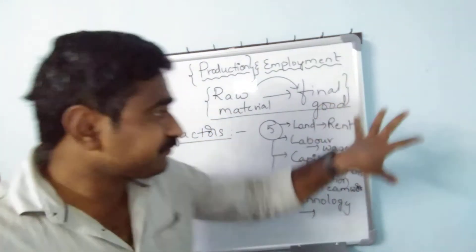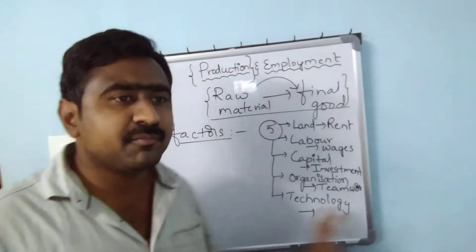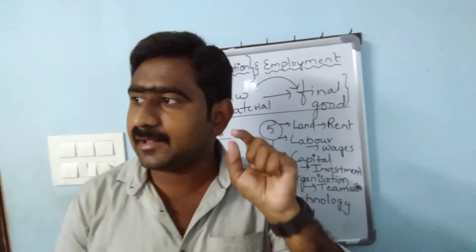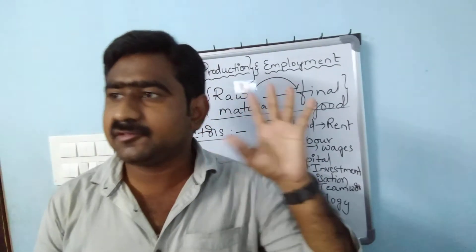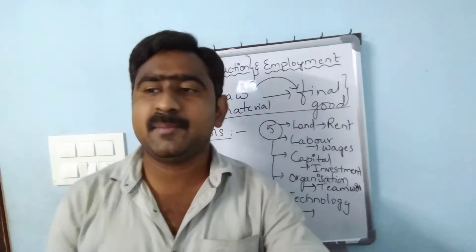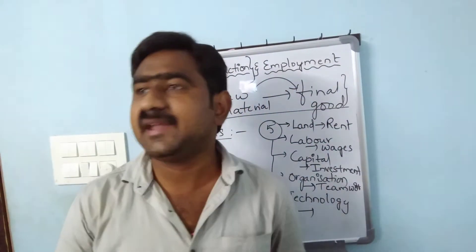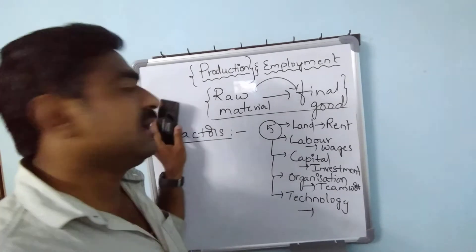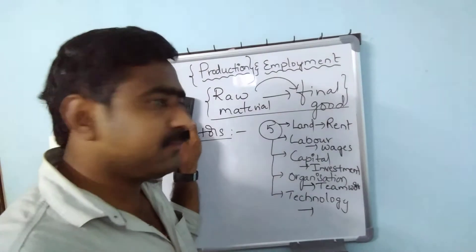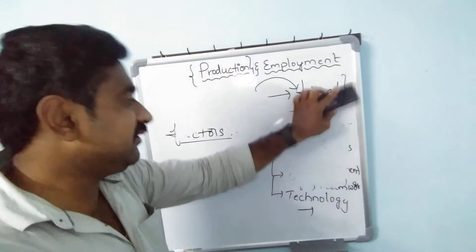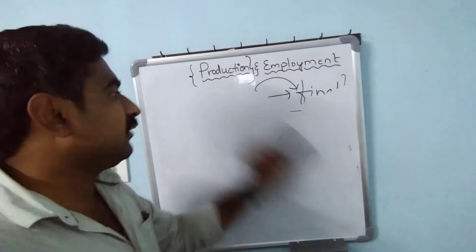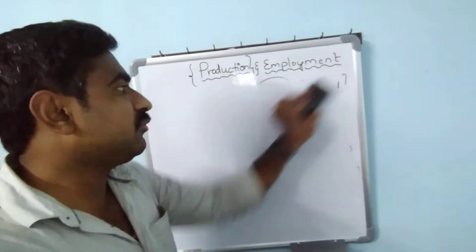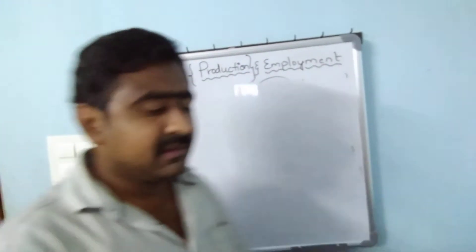These are the factors of production. There are five important factors: land, labor, capital, organization, and technology to carry out production. Production is nothing but the process in which raw material is converted into a final good. That is about production and its factors.